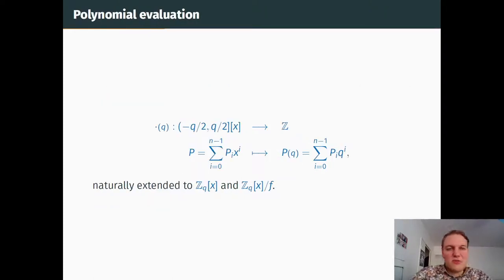We then need a way to go from polynomials to integers. To do so we introduce the polynomial evaluation by stating that if I have a polynomial with coefficients in minus q over 2, q over 2, I simply substitute q to the unknown x and I get an integer in Z. To extend it to Z_q[x], we take representatives of the coefficients of the polynomial in minus q over 2, q over 2 and apply this recipe.